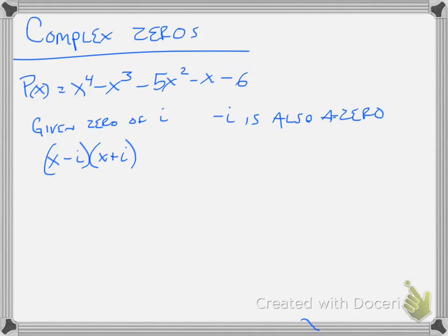What I can do is multiply those out. Because these are conjugates, it's that difference of squares pattern: x squared minus i squared, which is going to become x squared plus 1.